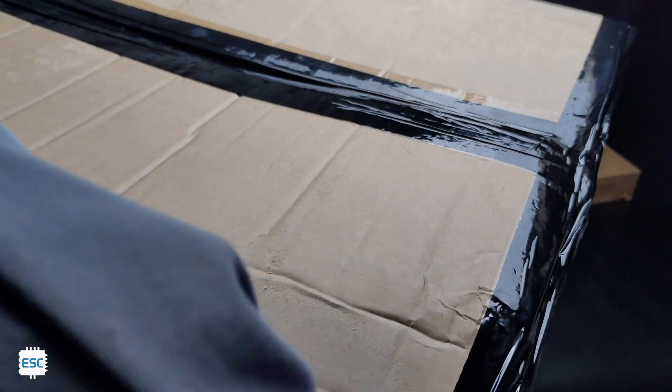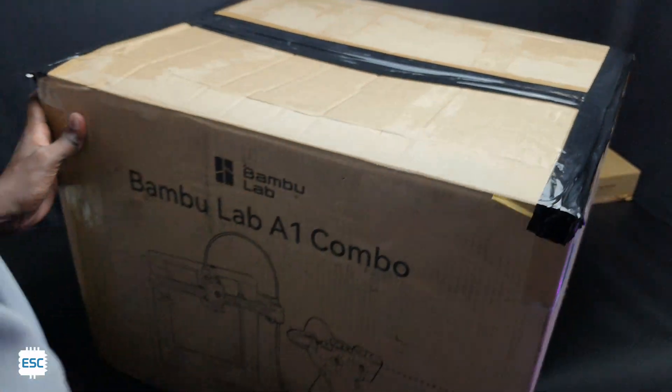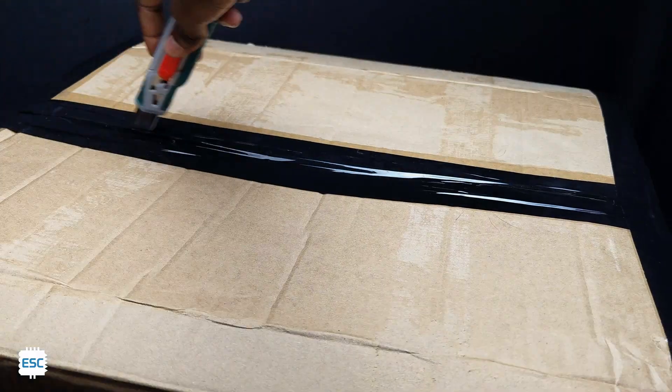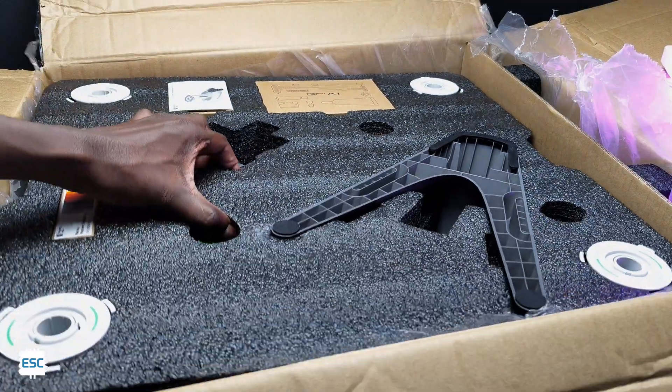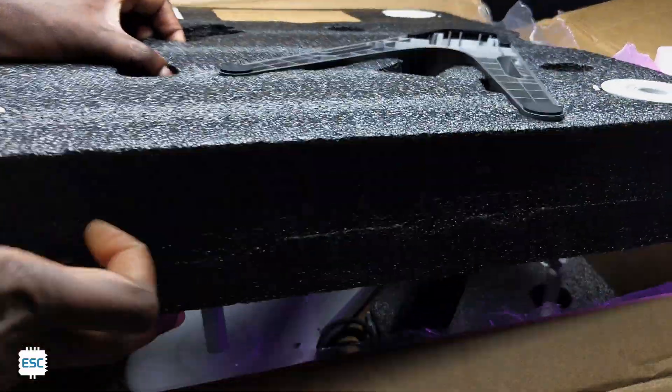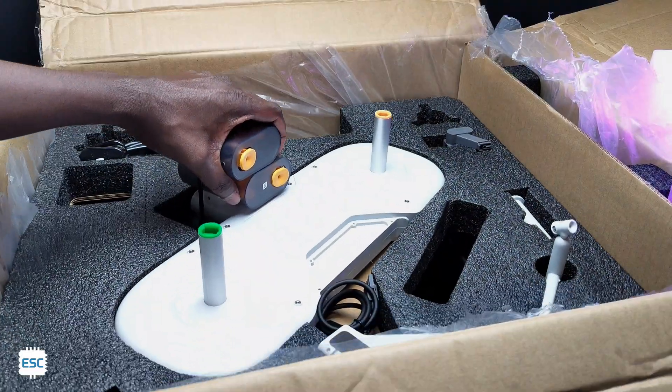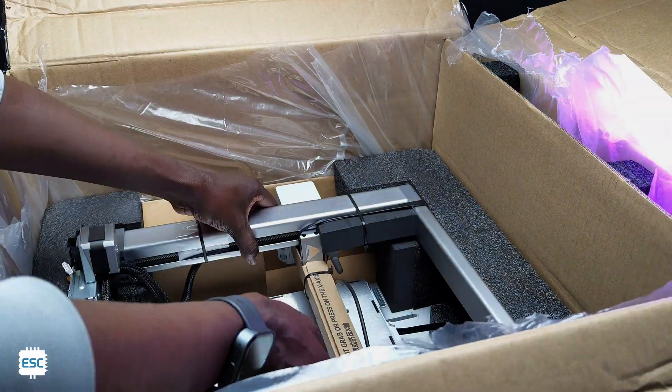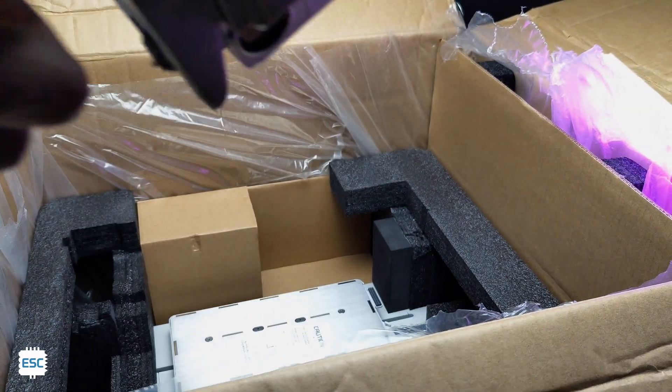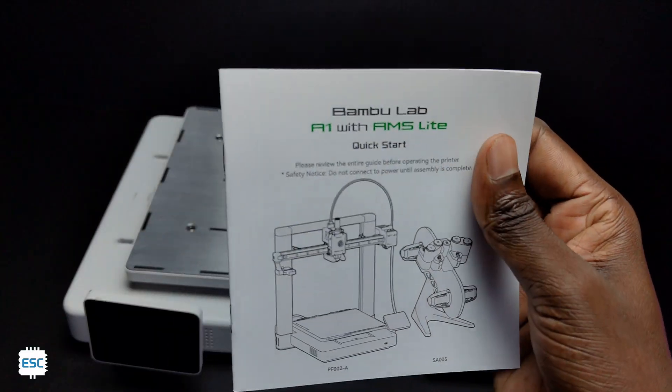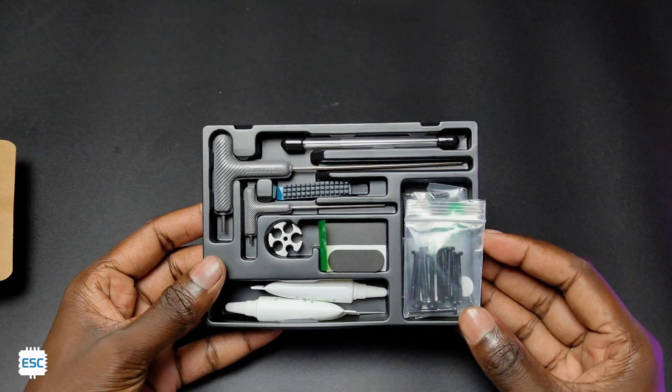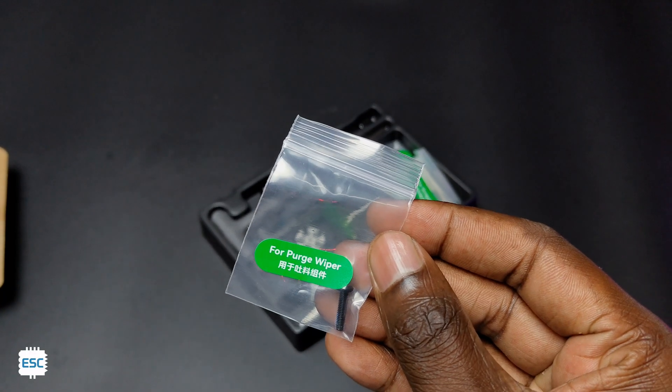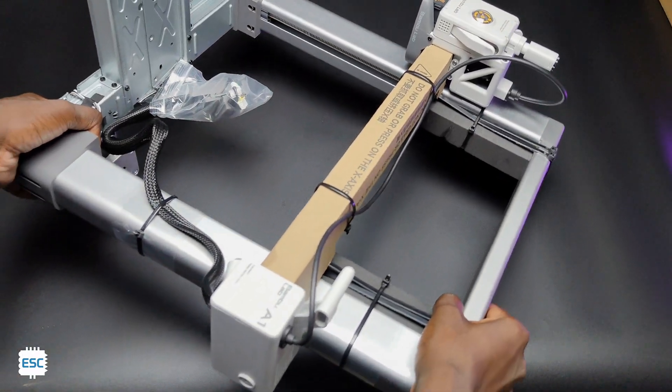So the Bambu Lab A1 comes in this big pack. Everything is well packed and secured inside the box. I'm not explaining all the unboxing details. All assembly details are explained in the manual. All the tools required for assembly and maintenance are available in the toolbox. Everything is labeled separately which makes the assembly very easy.